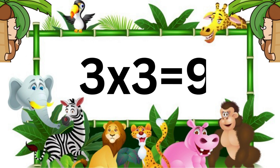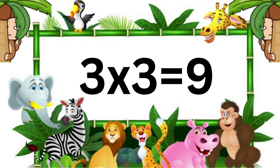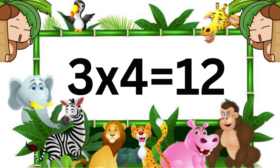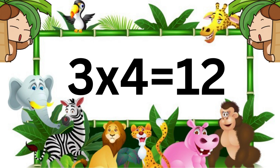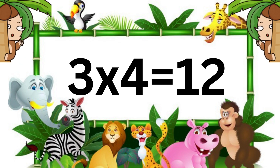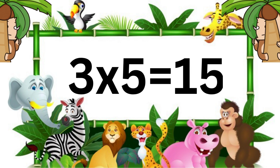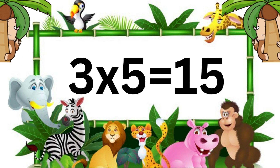Three three's are nine. Three four's are twelve. Three five's are fifteen.